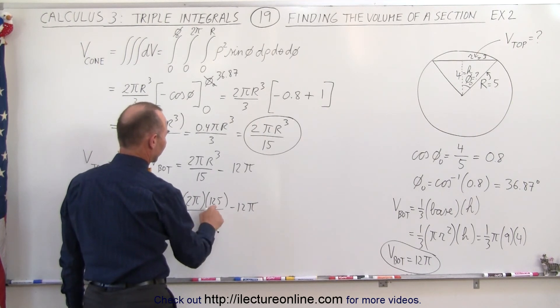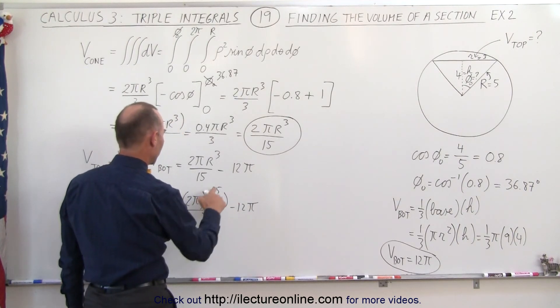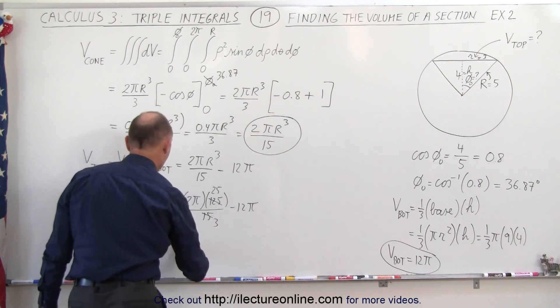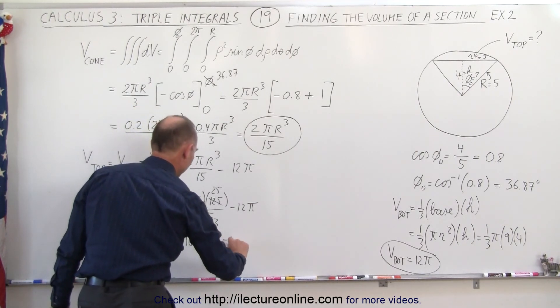125 divided by 5 gives us 25. This divided by 5 gives us 3, so that would be 25 divided by 3. That would be 50 divided by 3, which is equal to 16.67π minus 12π.